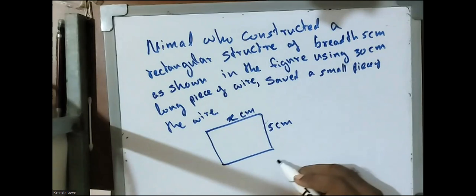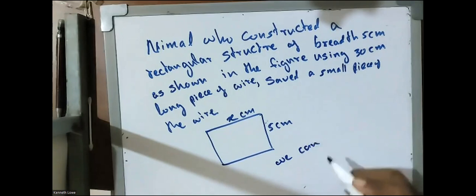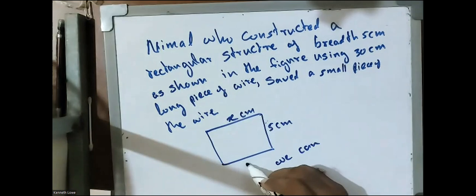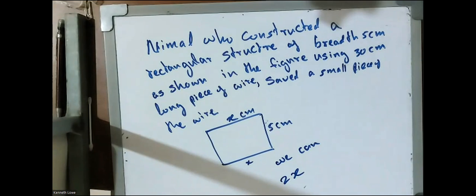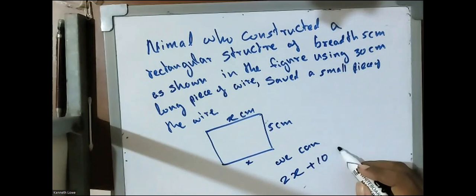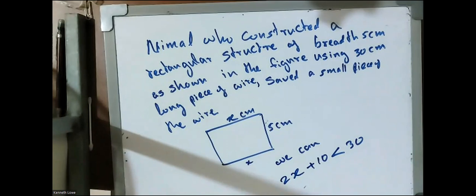We can build up the inequality equation. 2x - the perimeter of the rectangular structure - 2x plus 10 less than 30. Total length of the wire is 30 centimeters.